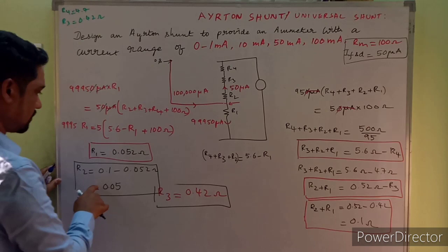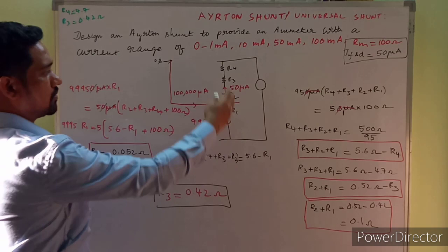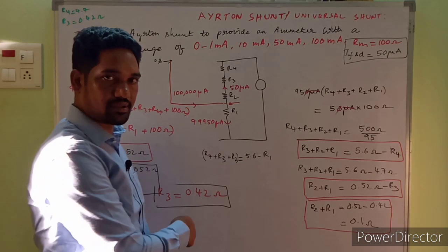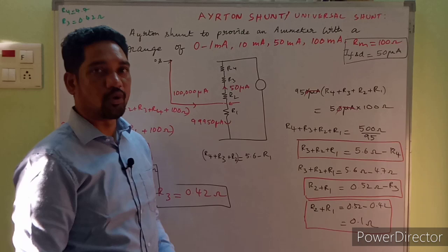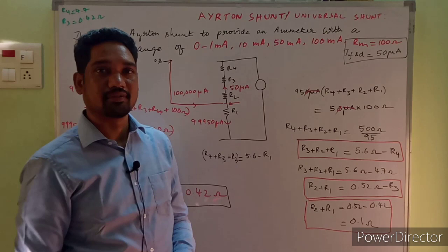Going back to that, R4 = 4.7 Ω, R3 = 0.42 Ω, and those are the values for the resistances. We have substituted all values — that completes the design of the Ayrton shunt. Hope you understood this. If you found this useful, please share my videos. Thank you for being with me. Stay home, stay safe, and subscribe to Chandra's Engineering Tutorials for more updates.